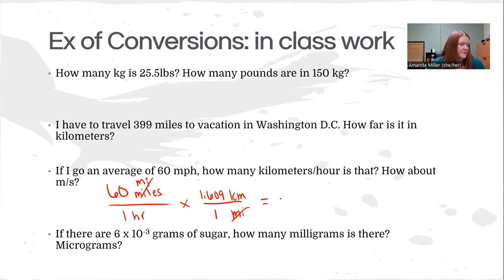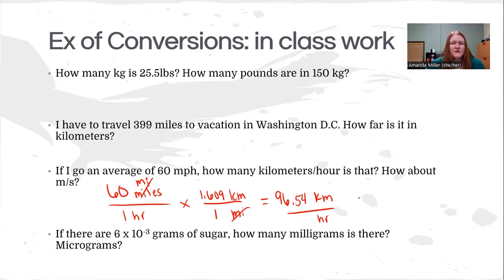The calculator says 96.54, giving kilometers per hour. I only have one significant figure in the original value, which means I have to round significantly. Two sig figs would give 97 km/h, but with only one sig fig I have to round the 9 up, giving 100 kilometers per hour.